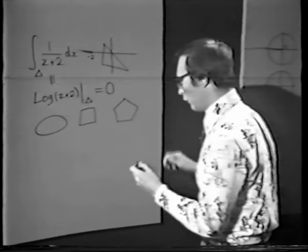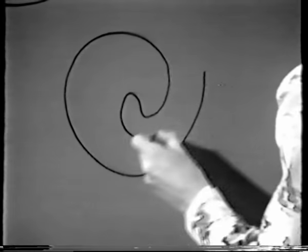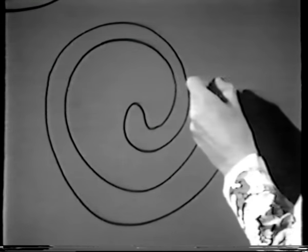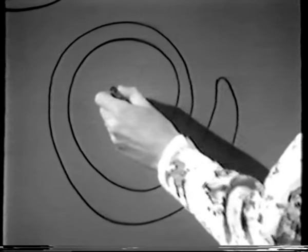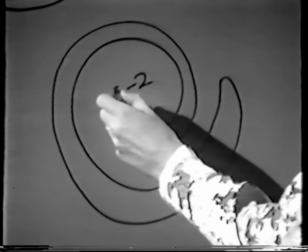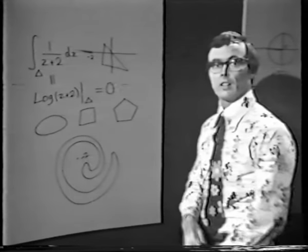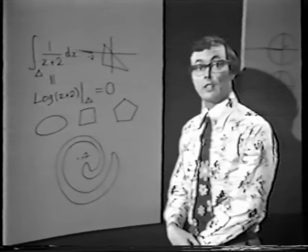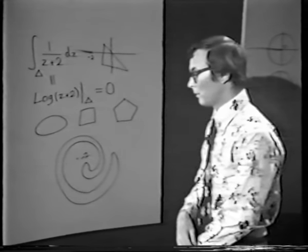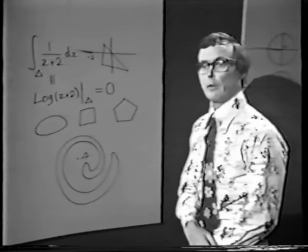The only time you'd get into trouble is with a complicated contour that has the point -2 inside it. If you try to draw a cut from -2 to the outside world, the contour gets in the way. In that case we'd be stuck — but later in the course we'll show you how to get around that difficulty.